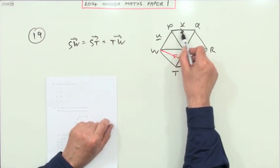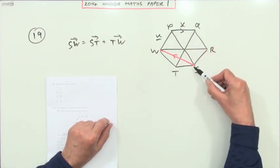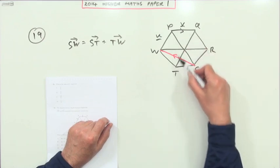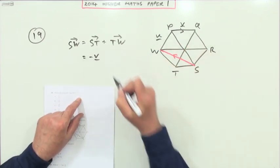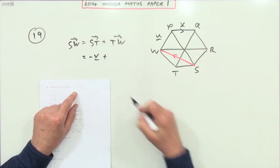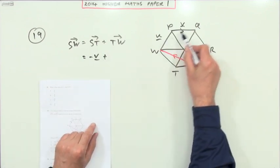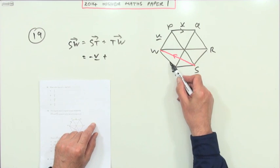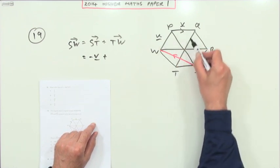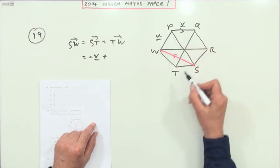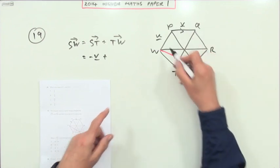ST is parallel to PQ except I'm facing the opposite way, so ST is negative v. I've got that one, that's negative v plus. Now TW isn't one of those, so I'll have to find some combination that'll give me one of those lines. There's various pathways.